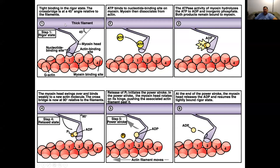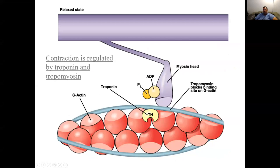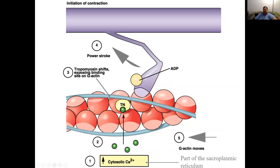As seen from the animations: the thick filament grabs onto the actin with the myosin heads — the rigor state. ATP causes the head to relax and move, attaching to the next actin protein. Release of the free phosphate allows the power stroke. During the relaxed state, tropomyosin blocks the myosin head until calcium attaches to troponin, moves tropomyosin out of the way, and opens the spot for the myosin head to attach to the actin.